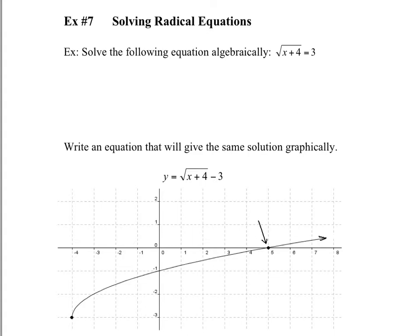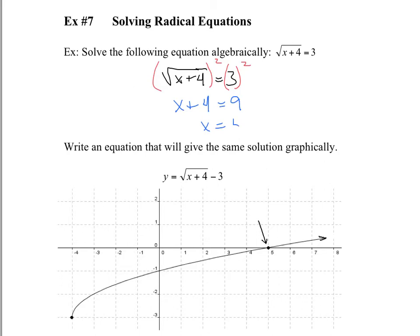So to solve algebraically, I'll rewrite the equation: x plus 4 equals 3 square root. To get rid of this square root, you're going to square both sides. That eliminates the square root because the square root is the exponent of a half and squaring gives exponent 2 — multiply them and it becomes 1. So you have x plus 4 on the left, and 9 on the right. Subtract 4 from each side, and you get x equals 5.